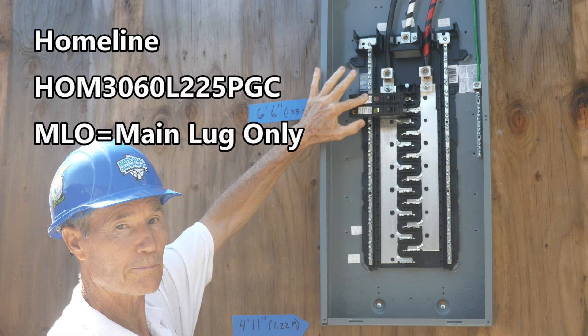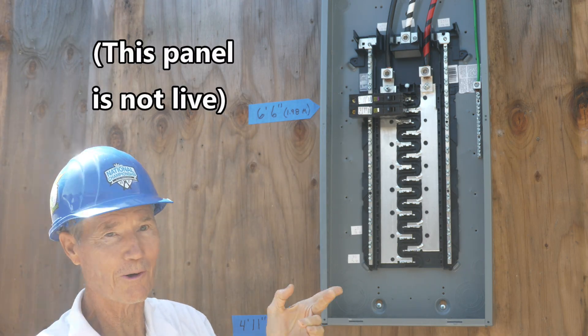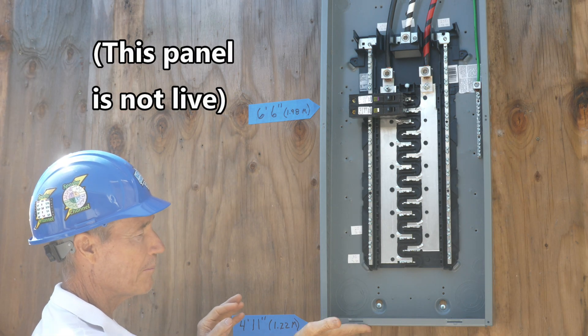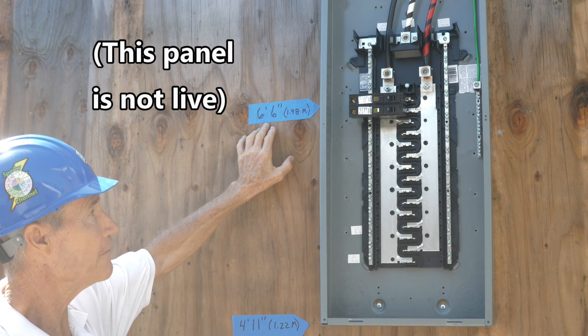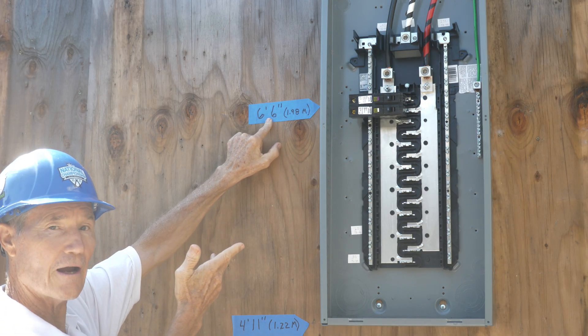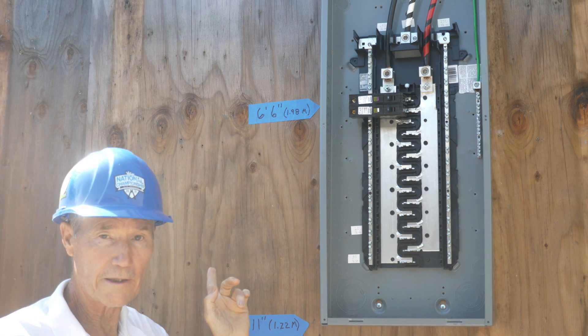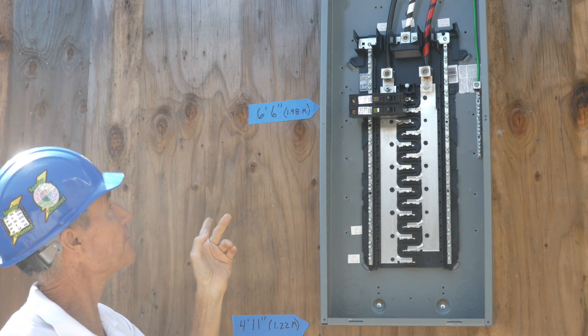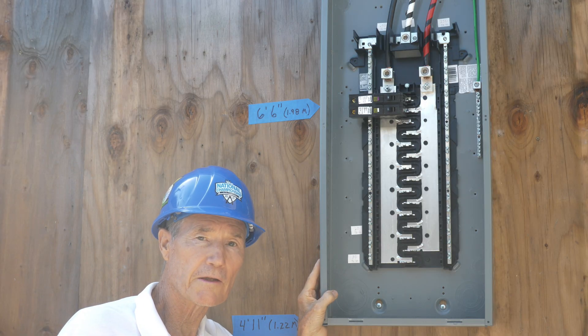So we got 4 foot 11 for the bottom. This top breaker right here is 6 foot 6 inches from off the ground, which is 1.98 meters. Remember that, 1.98 meters. And the top of the panel is at 7 foot 8 inches.